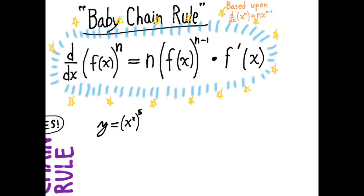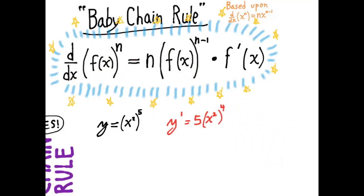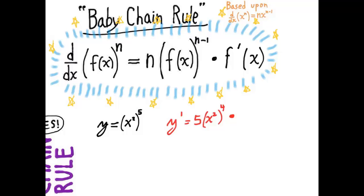But let's just use the baby chain rule on this just to see how the tool works and to make sure that it gives us 10x to the ninth. So f of x in this case is x squared. So the derivative of x squared to the fifth is going to be 5 times x squared to the fourth times the chain rule factor, which in this case is 2x.